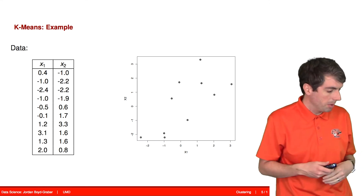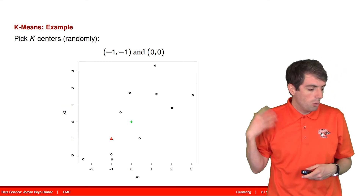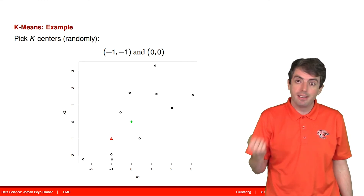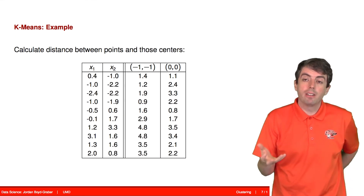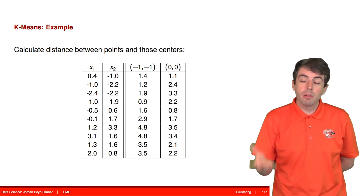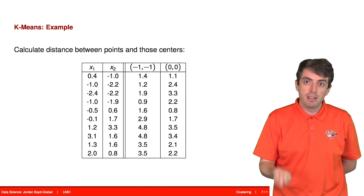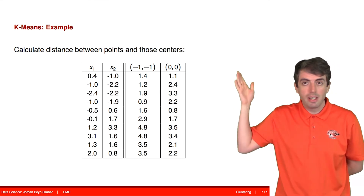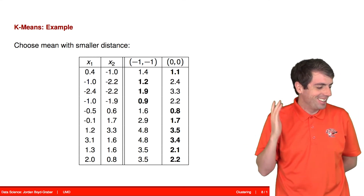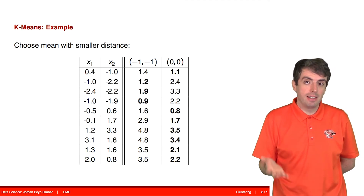Now let's see an example with numbers. Here is our data laid out in a two-dimensional space. We'll say the initial cluster centers are at (-1, 1) and (0, 0). We need to figure out which center is closest to each individual point using Euclidean distance. We compute the distances to both the (-1, -1) cluster and the (0, 0) cluster, and we can see the top points are closer to (-1, -1) while the bottom points are closer to (0, 0).